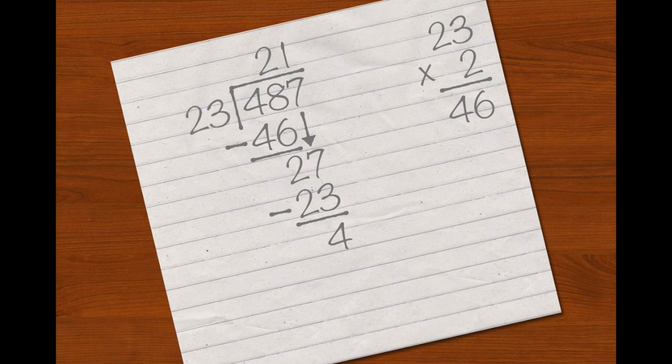23 does not go into 4 so we write 4 as a remainder. Although the strategy is effective and it does give you the correct answer, it's not the best strategy to use.